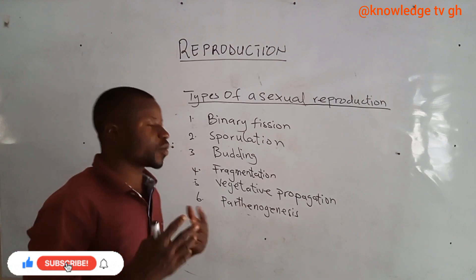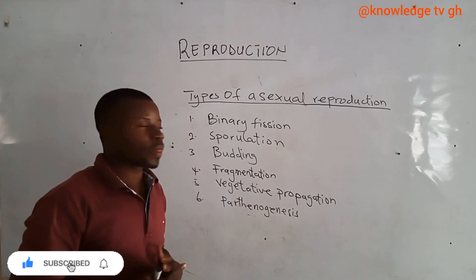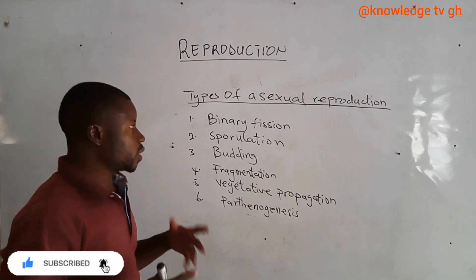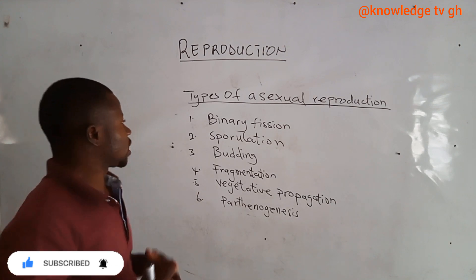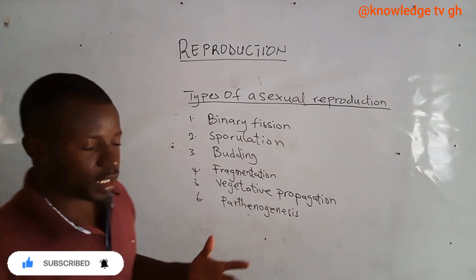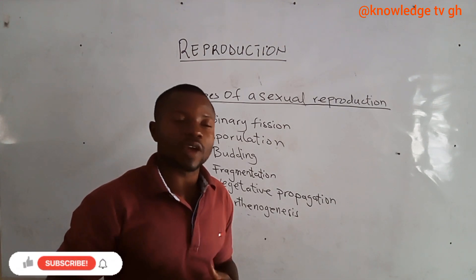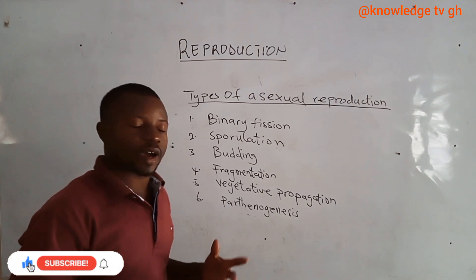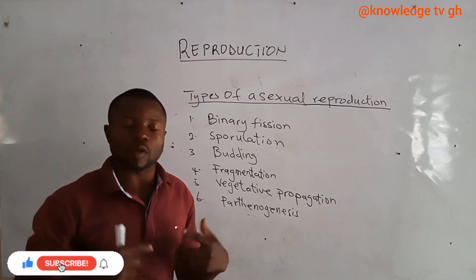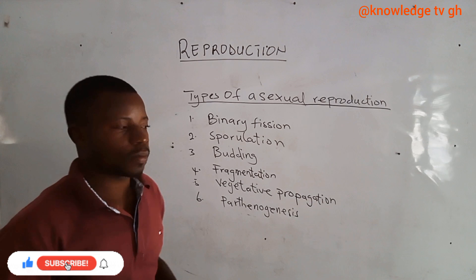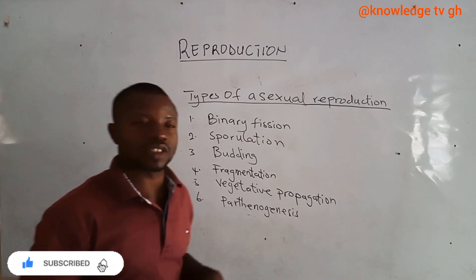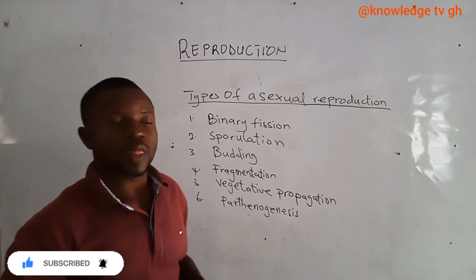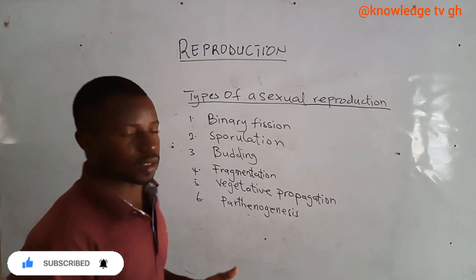There are types of asexual reproduction. Number one is binary fission. Number two is sporulation. Number three is budding. Number four is fragmentation. Number five is vegetative propagation. And number six is parthenogenesis. We are going to take all of them and look at them in detail.